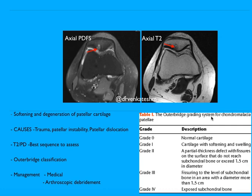The best sequences to assess chondromalacia patella are the T2 or PD sequences, which are very much better for appreciating cartilage thickness, cartilage abnormalities, and bony changes in the PD fat-sat sequences.